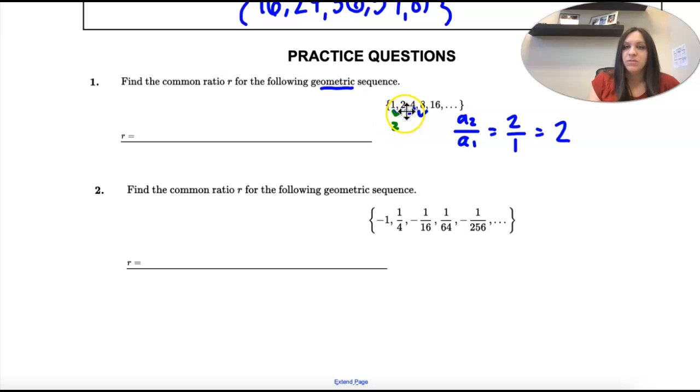1 times 2 is 2. 2 times 2 is 4. 4 times 2 is 8. 8 times 2 is 16. So 2 does work, and that would be your ratio.